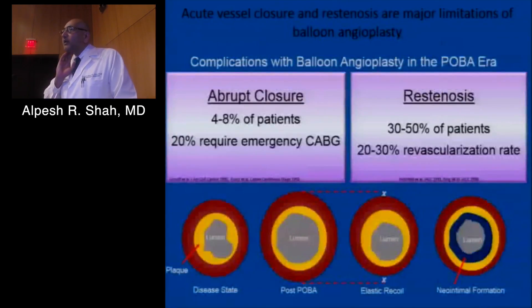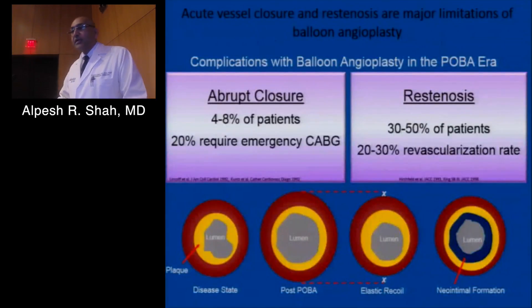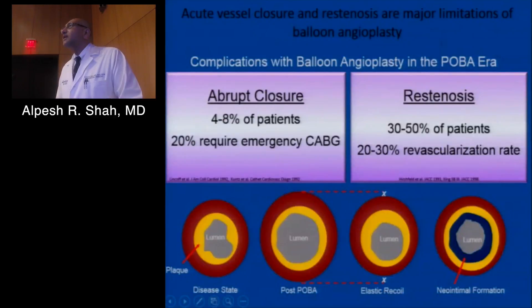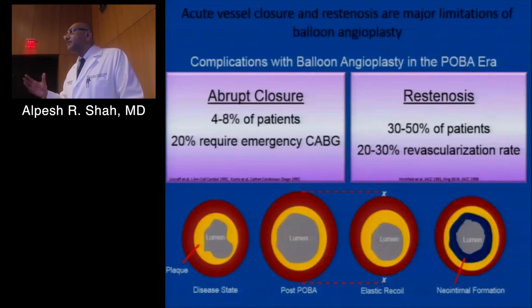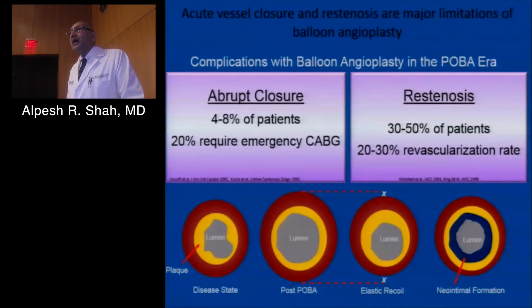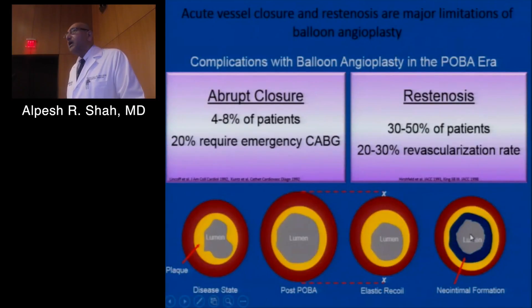We have to start with balloon angioplasty, because that's how this all began. Right away in the balloon angioplasty era we realized certain challenges, including abrupt vessel closure — where you open up an artery and it immediately closes down — requiring open heart bypass surgery. We're talking about the 1970s. Patients who survived also experienced restenosis: 30 to 50% continued to have restenosis, leading to revascularization rates of 20 to 30%, caused by immediate recoil followed by neo-intimal proliferation. There was really nothing keeping the artery open.